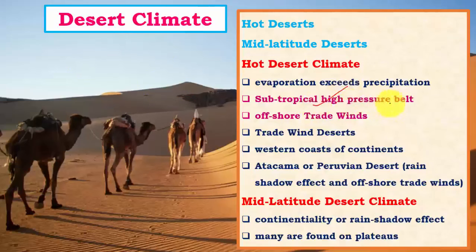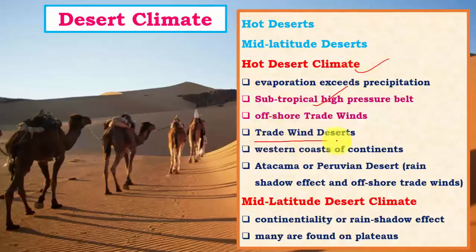Another important concept is offshore trade winds. These are winds which flow from continent to seas, so they carry little moisture and don't cause good amounts of rainfall — this is one reason why we have hot desert regions. Because of offshore trade winds, these deserts are also called trade wind deserts. Most of these deserts occur on the western sides of continents, mainly because of cold ocean currents.